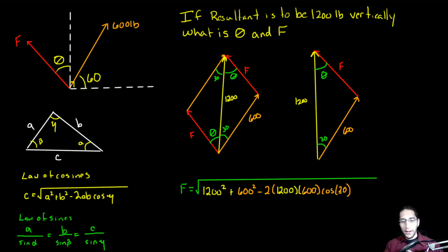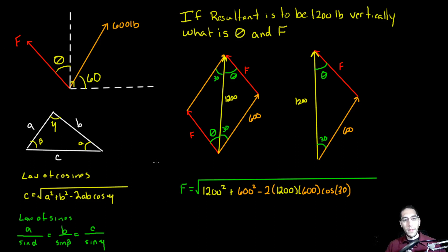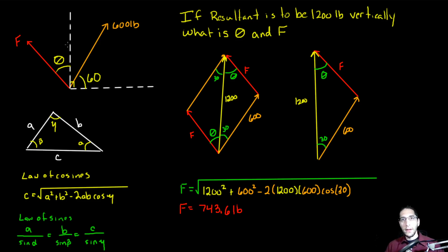Putting that in the calculator: square root of 1,200 squared plus 600 squared minus 2 times 1,200 times 600 times cosine of 30. That gives us F equal to 743.6 pounds. That's the force we need to apply at F in order to get our resultant completely vertical.